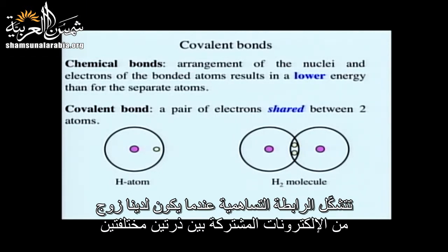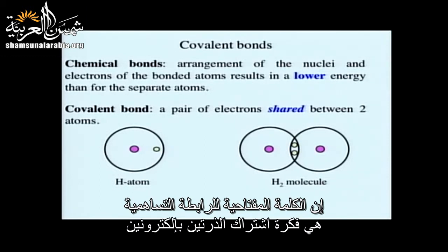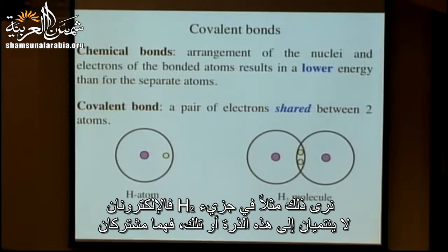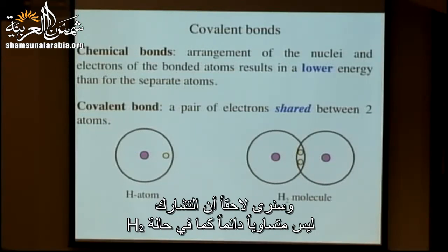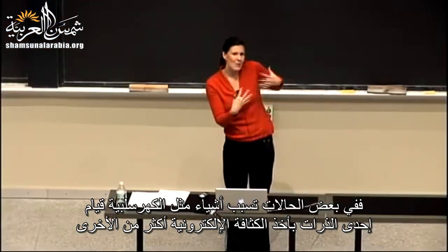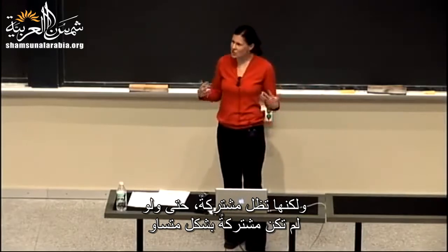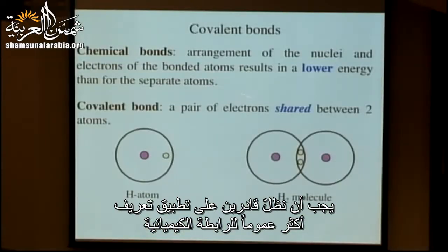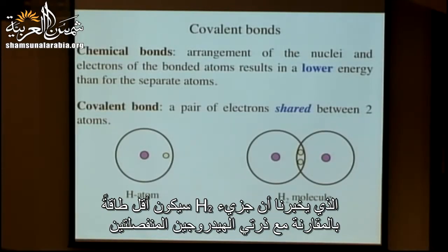Specifically, we'll discuss covalent bonds — any time a pair of electrons is shared between two atoms. The key word is 'shared.' In H₂, the two electrons don't belong to one atom or the other — they're shared. The sharing is not always equal; because of electronegativity, one atom may take more electron density, but electrons are still shared even if not evenly.